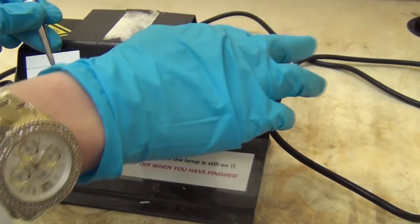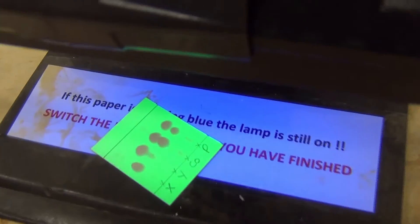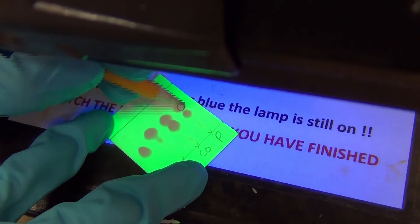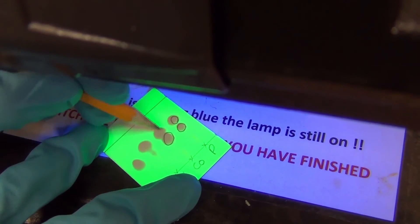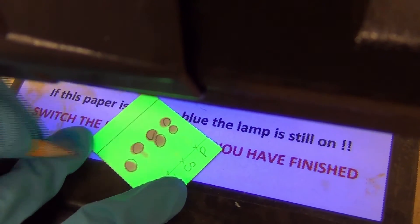More often than not, the spots on the plate are colourless, so we need to use several techniques that visualise the spots on the TLC plate. The most common technique is to first look at the plate under a UV lamp. We then draw around the spots that are visualised using pencil, being as accurate as possible.